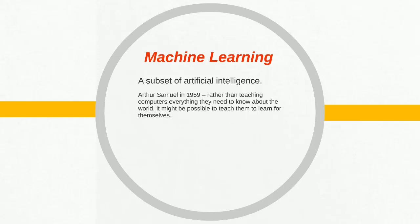However, it wasn't necessarily possible until we developed the internet and started collecting all of this data. Data is really the essential part of machine learning because we have to learn from past experience. Until we had good datasets developed, we couldn't do much machine learning. But now that we have that, we're able to accomplish some of the tasks noted in our AI definition.